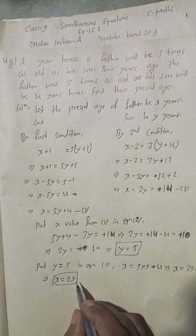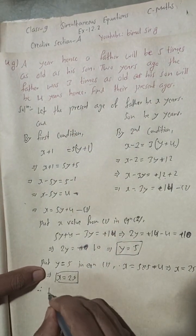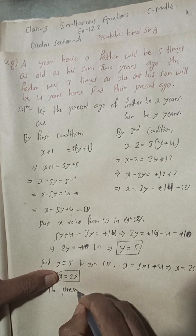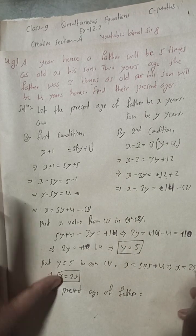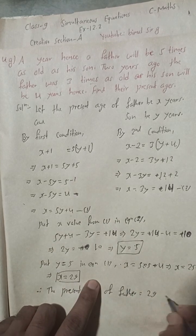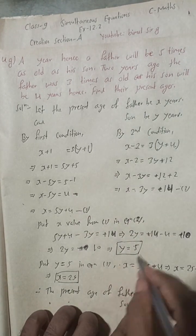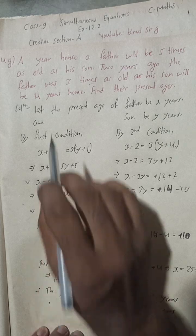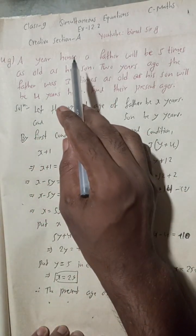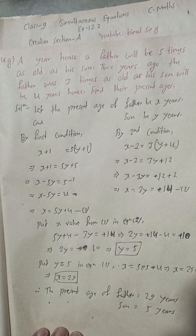Therefore the present age of father is x equals 29 years, and the present age of son is y equals 5 years. This is the complete solution of question 4g, creative section A. Solutions for creative section B are already uploaded — check the playlist. If you are watching on YouTube, like, share and subscribe. If watching on Facebook, follow us there. See you in the next video. Jai Shri Krishna.